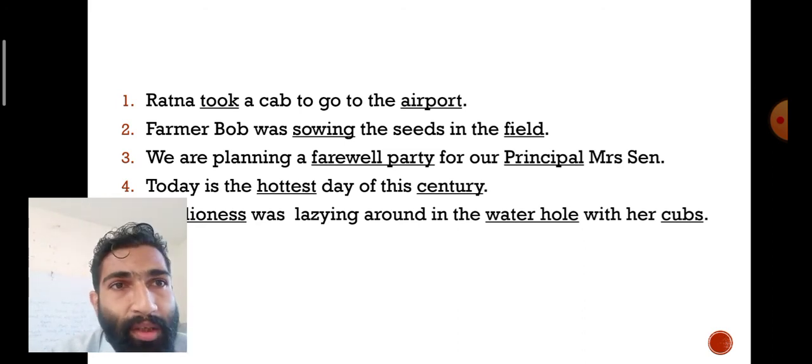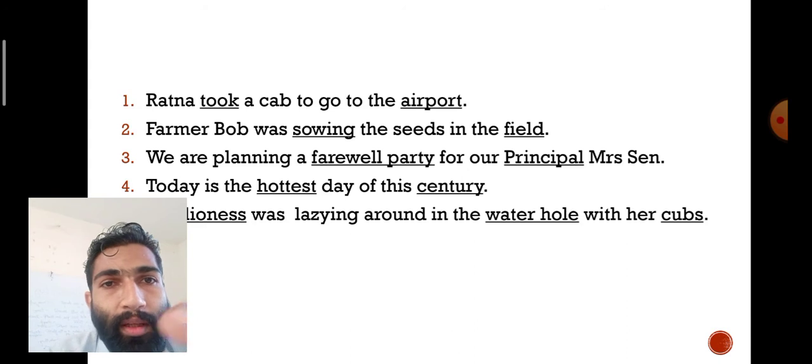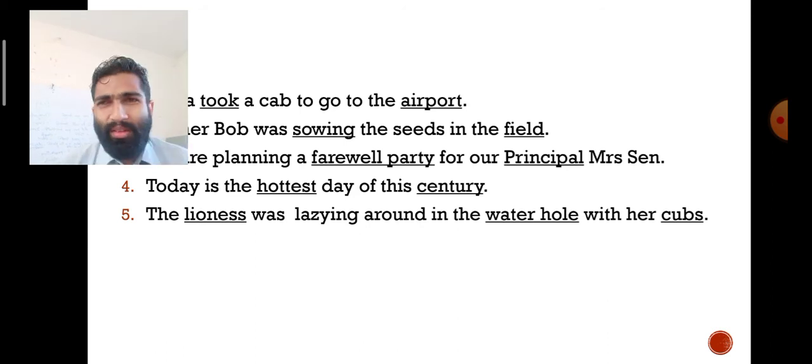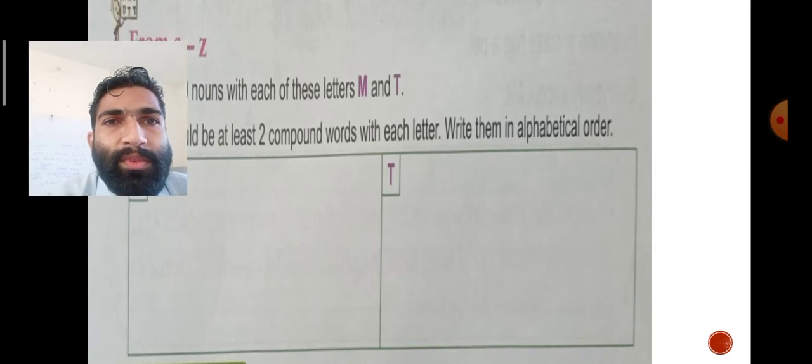Farmer Bob was sowing the seeds in the field. These are the underlined words with spelling mistakes. We are planning a farewell party for our principal Mrs. Sen. Today is the hottest day of this century. The lioness was lazing around in the water hole with her cubs. Lazing means just resting, being lazy.